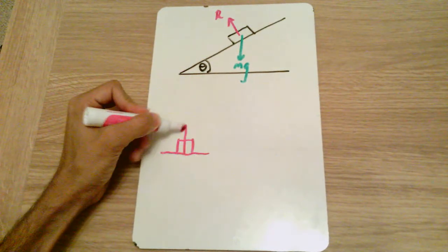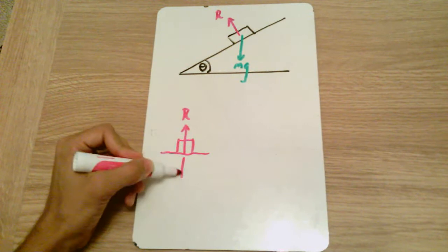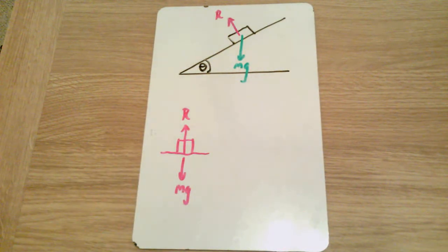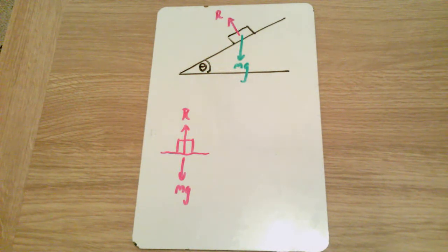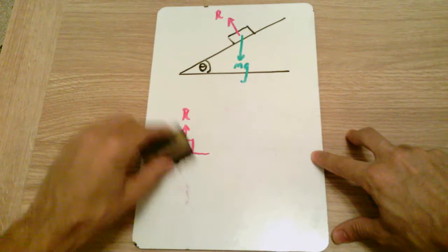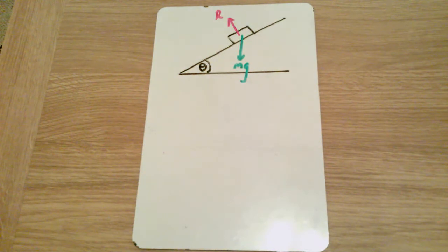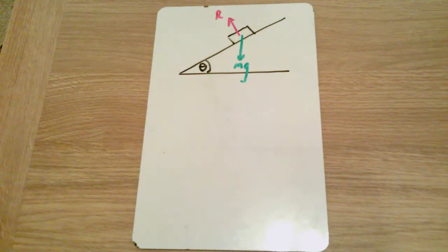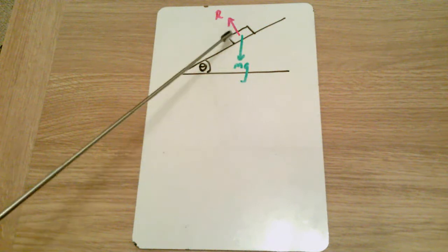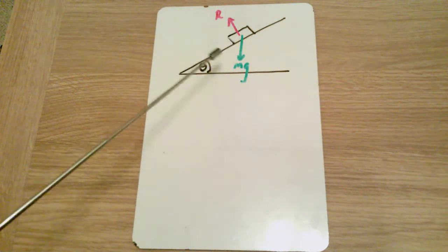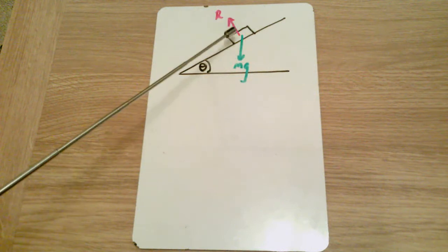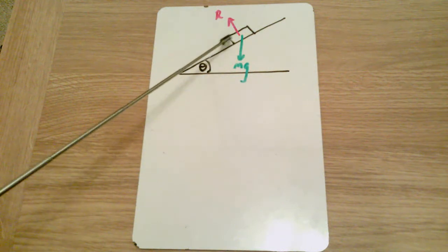That reaction force always acts perpendicularly to the surface. On a horizontal plane, the reaction force R comes up and mg comes down in a balanced manner. On an inclined plane this is different, because the reaction force and the weight are not acting in the same perpendicular direction. The weight is causing the particle to move down the slope.